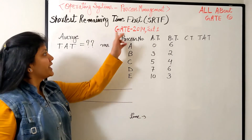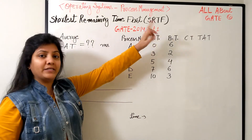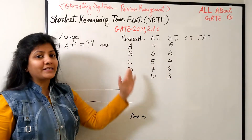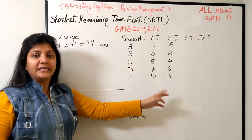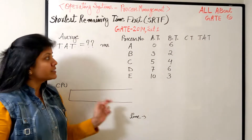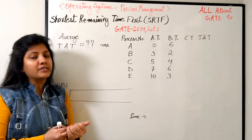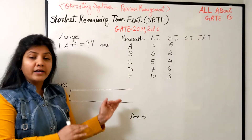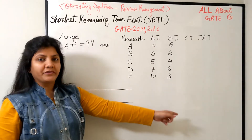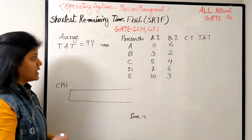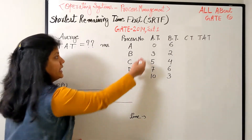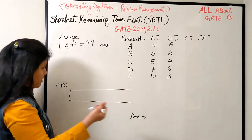The next question is from GATE 2014, Set 2. The question says: consider a system where processes and data are given. Find the average turnaround time when applying the Shortest Remaining Time First algorithm. This was a numerical-based question with no options given. We have five processes A, B, C, D, E with their respective arrival times.